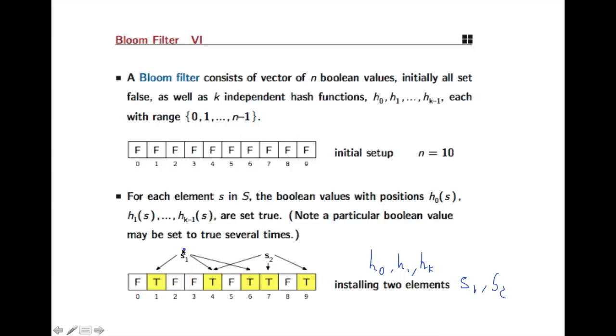Now, if we get the element s1 again, then we'll just check whether all of the corresponding locations are true, and then we'll say it's there. Otherwise, we'll say it's not there. If one of the locations is not set to true, then we haven't seen it before.